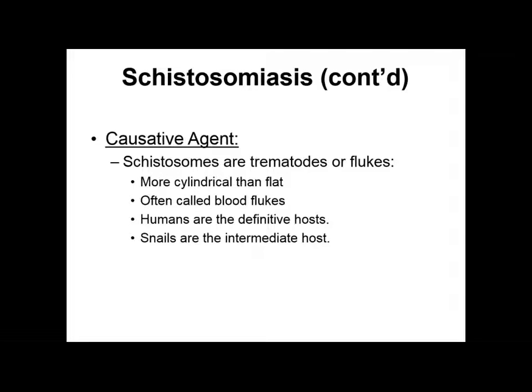These schistosomes are trematodes, or flukes, and these can cause the disease. These worms are more cylindrical than flat in appearance and have often been called blood flukes. Humans are the definitive host, meaning the adult stage develops in the human, while snails are the intermediate hosts for these flukes.